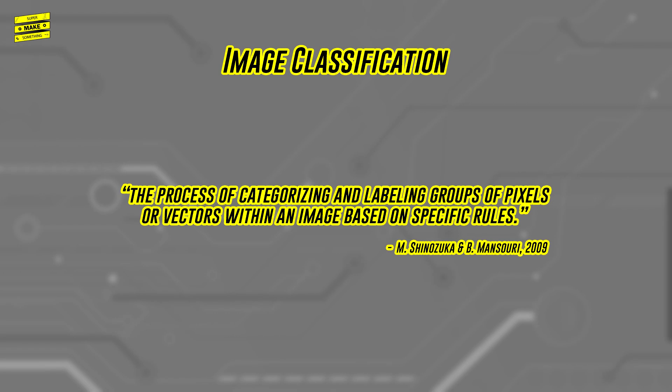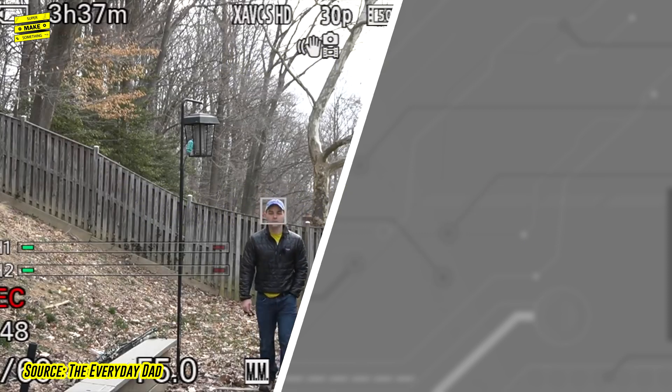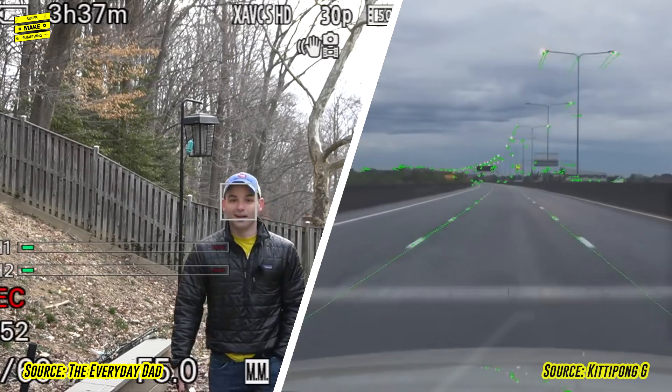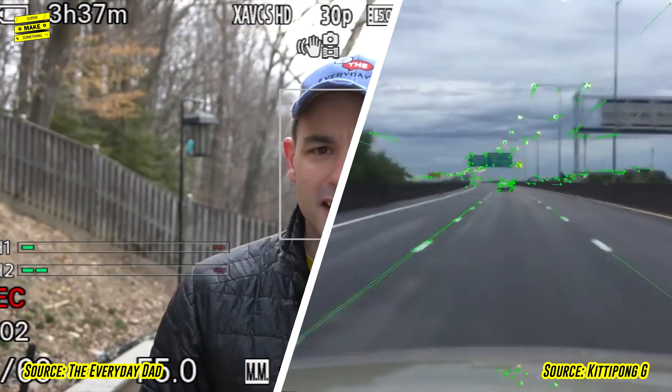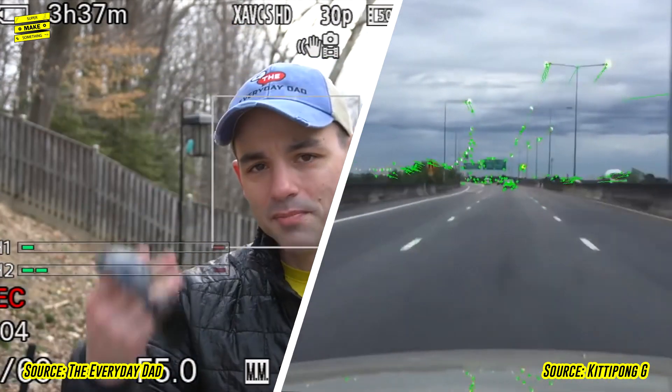Image classification is one of the most common applications of machine learning today. From facial recognition and tracking in your camera when you take a photo, to identifying lane markers and roads in your self-driving car, applications that require a computer to understand what is in an image are all around us.